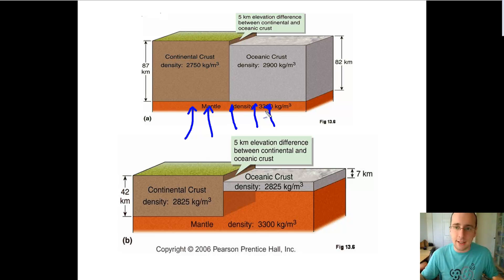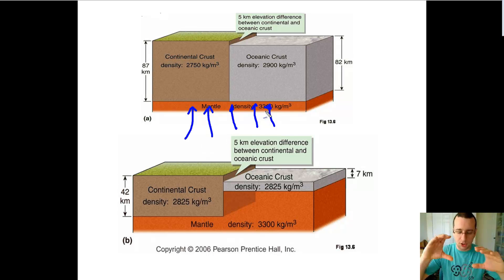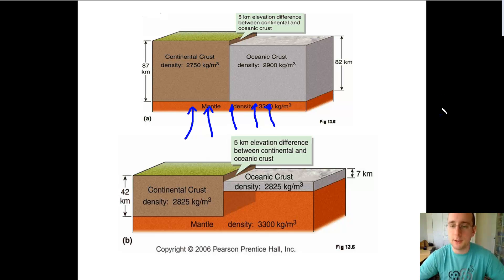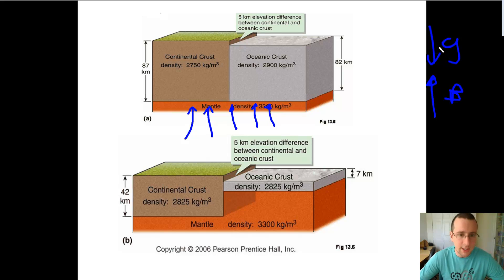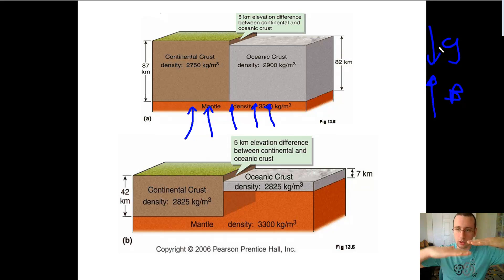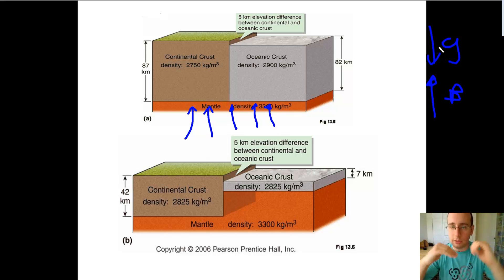If the density is changing — in other words if the mass changes — that would change how much the crust is going to be sinking or floating on the buoyancy force. Because if the buoyancy force is the same and you have gravity acting against it, if you were to increase gravity that's going to make the thing float lower into the buoyancy force until you reach the adjustment point, which we talked about in the last video.